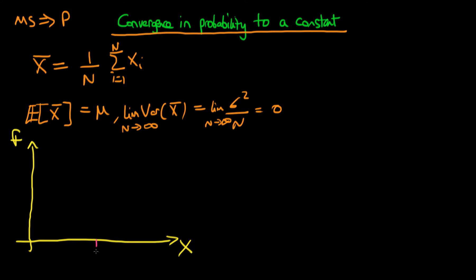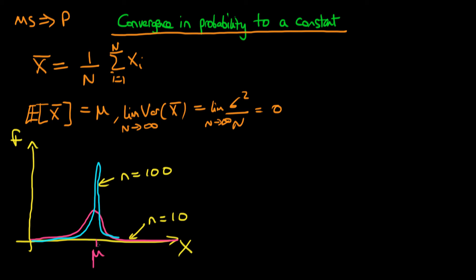We have a population mean μ marked on the diagram, and for any sample size our estimator is unbiased so it's always centered around that value. The first distribution shown is for n equals 10. As we increase the sample size to n equals 100, the distribution narrows. In the limit as n is infinite, we just have a straight line at μ — our random variable is no longer random, it is actually just a constant. That's what it means for the sample mean to converge in probability to the population mean μ.